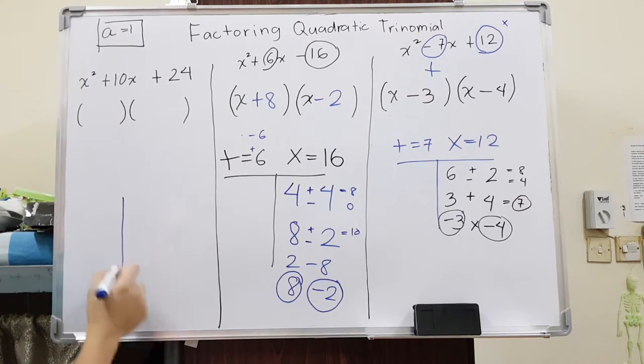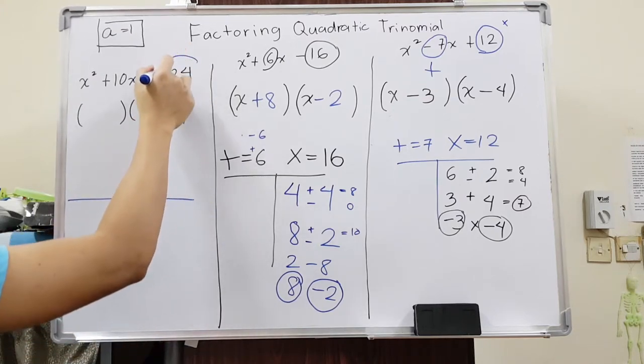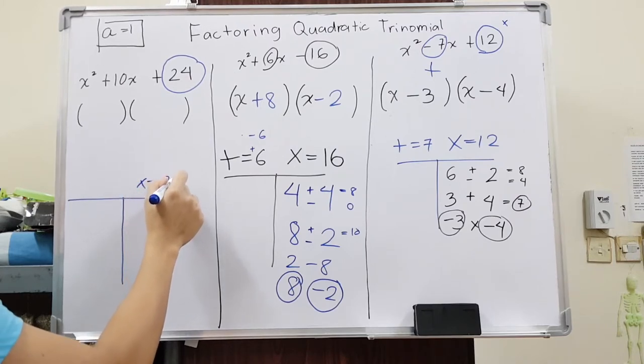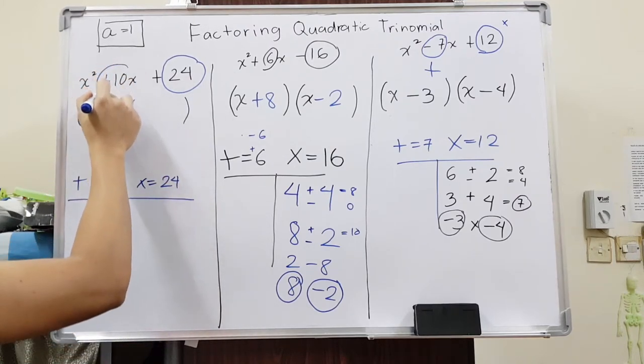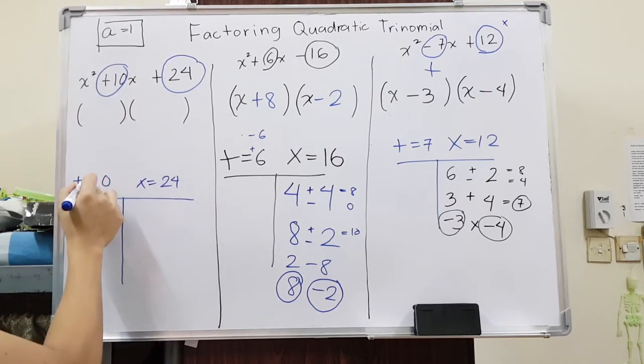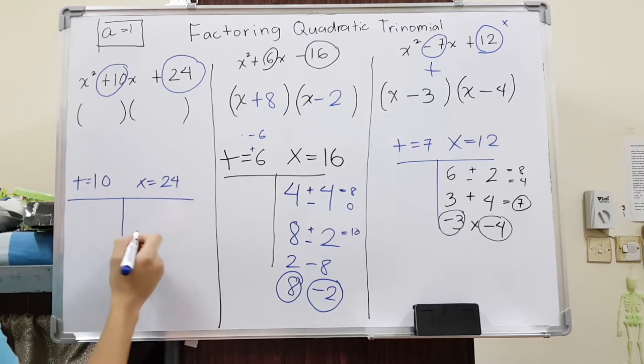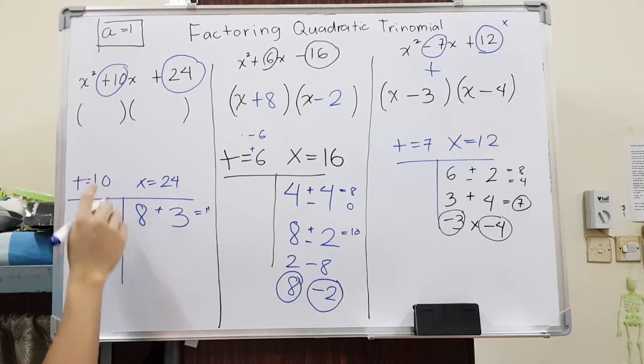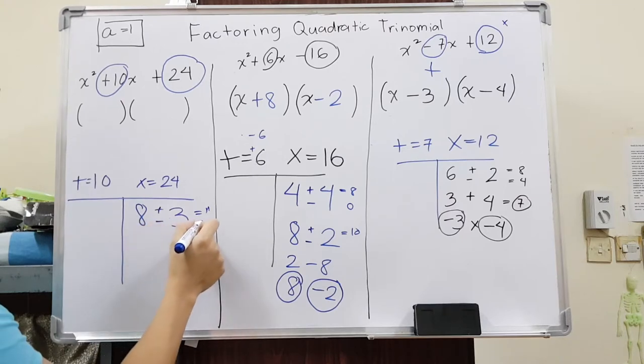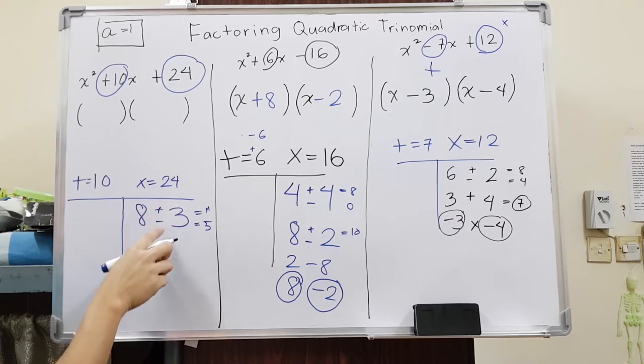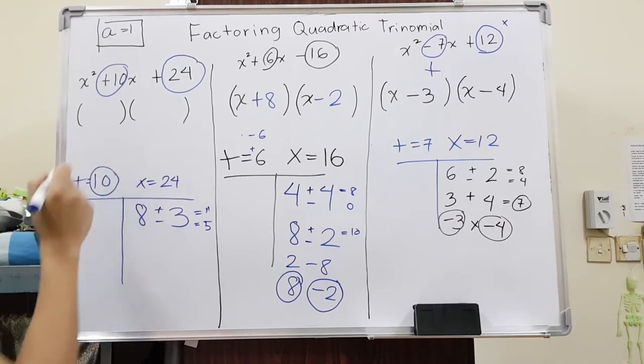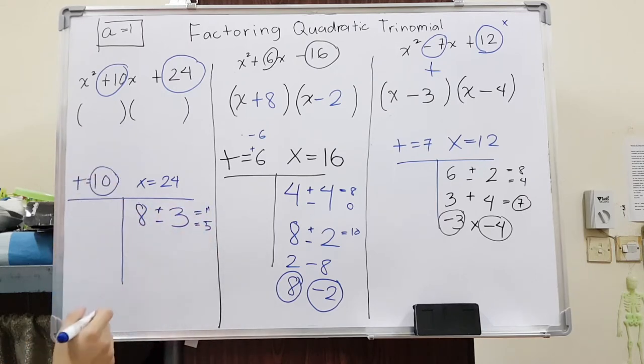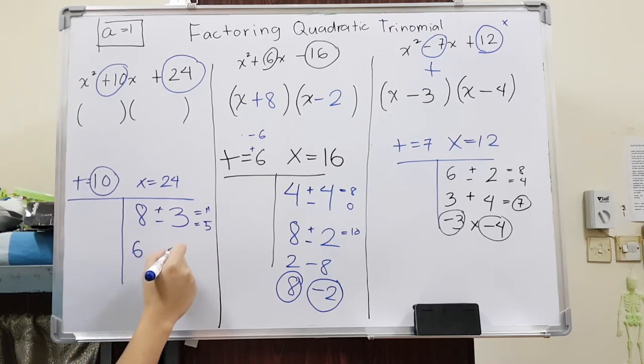Last one here. Again, two numbers that multiply to 24 and add up to the number on the middle, which is 10. To think of two numbers that multiply to 24, I will start with 8 and 3. I will ask myself, 8 plus 3 gives me 11. Do I need 11? No, I need 10. How about 8 minus 3? It gives me 5. You will just keep on trying on adding or subtracting them whether you will get the number here. Since it's 11 and 5, we can't use 8 and 3. So we are going to think of some other numbers for 24. I'm going to use 6 and 4.